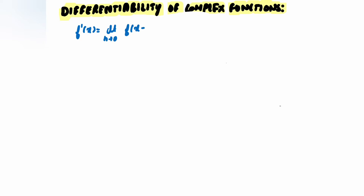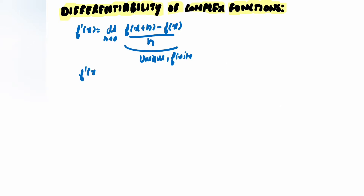Differentiability is exactly the same as we had in real functions. We say that f'(x) equals the limit as h approaches 0 of [f(x+h) - f(x)] / h. If this limit is unique and finite, then we say our function is differentiable. At a particular point x₀, f'(x₀) equals limit as h approaches 0 of [f(x₀+h) - f(x₀)] / h, and our function is differentiable at point x₀.